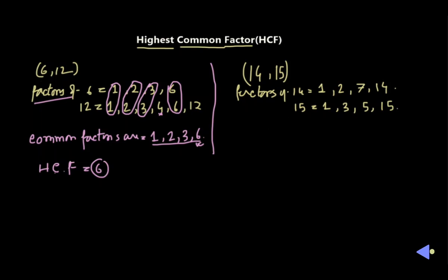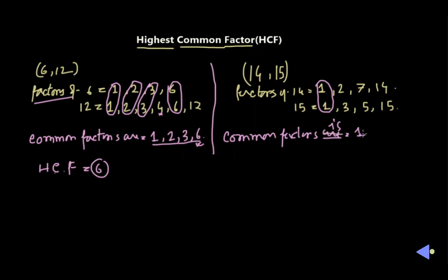Those are the factors of 14 and 15. Now finding the common values: 1 is common and present in both cases, but the rest are not common — for example, 2 is not present in 15. So the only common factor is 1. There is no other common factor for 14 and 15, so the HCF is 1. Since that pair has only one common factor, which is 1, that pair is called a co-prime number pair.